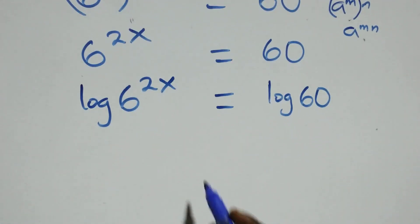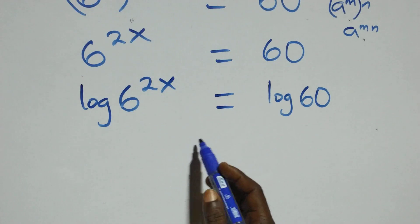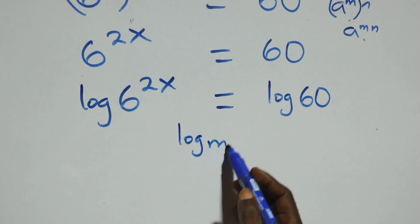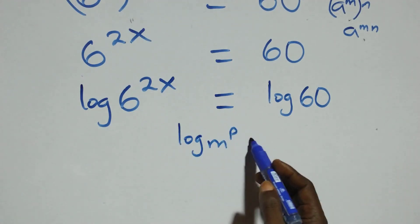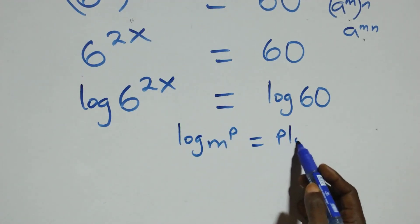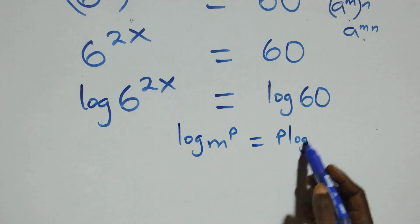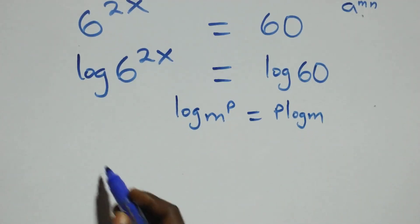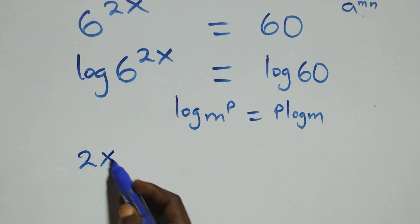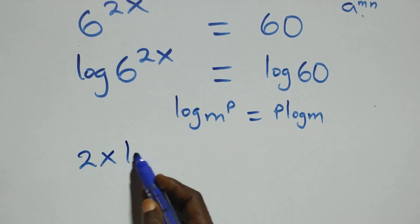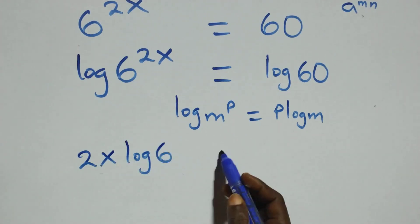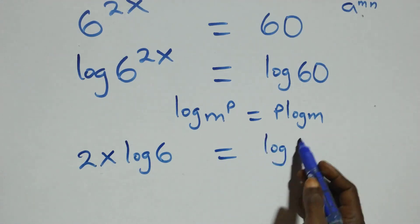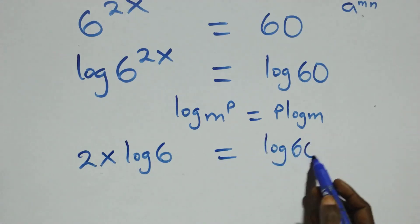Then here we apply the power rule of logarithm, where we have log of n raised to power p — this is the same thing as p times log n. So here this becomes 2x log 6 equals to log 60 from here.